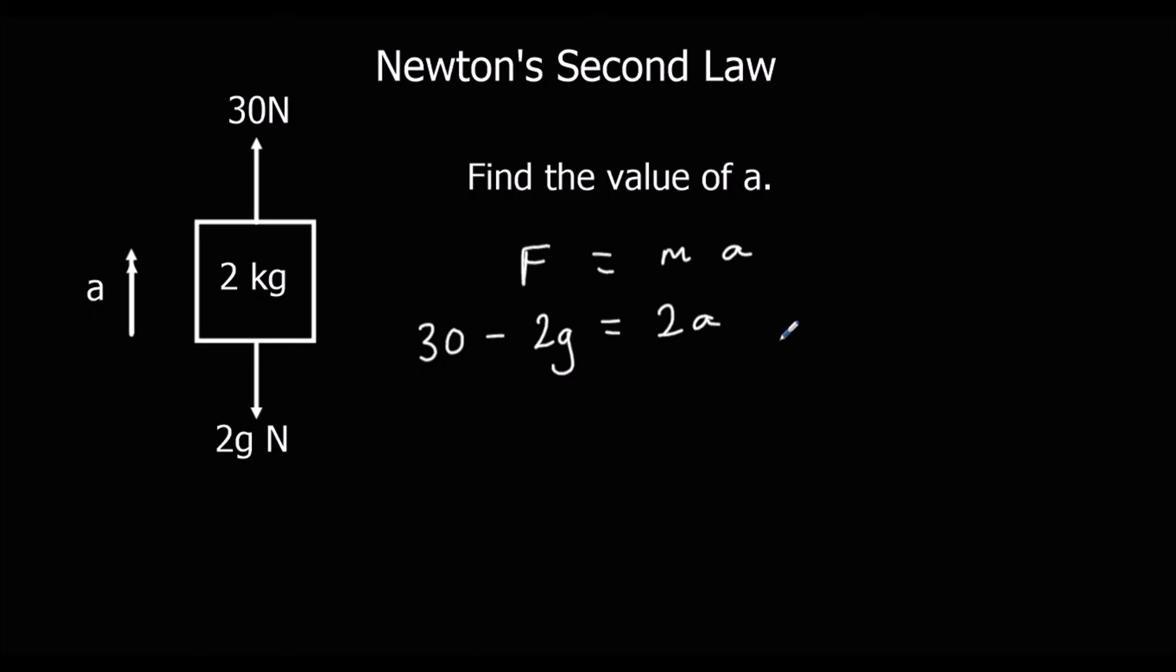We want to find A. If we divide both sides by 2, A is 15 minus G, in meters per second squared. Or if we substitute G as 9.8, we get A as 5.2 meters per second squared. Both answers are correct.